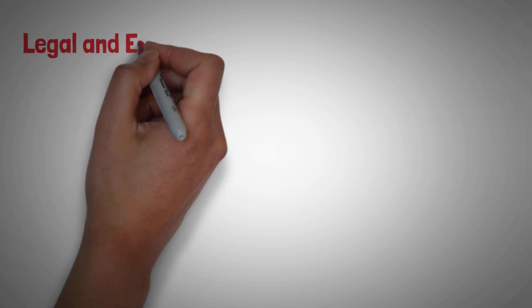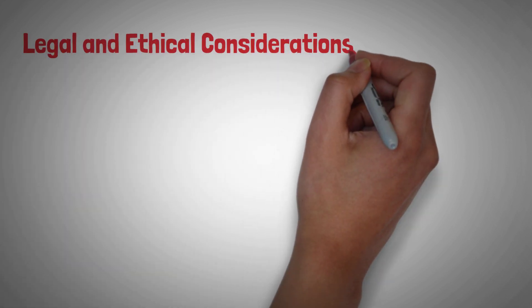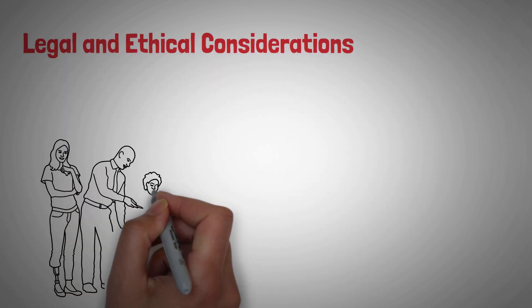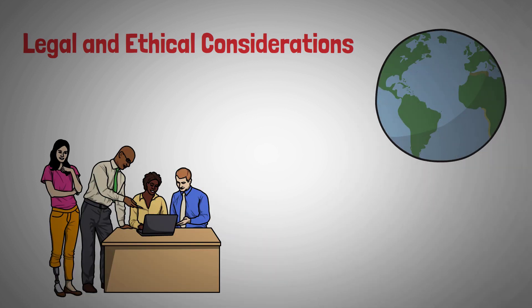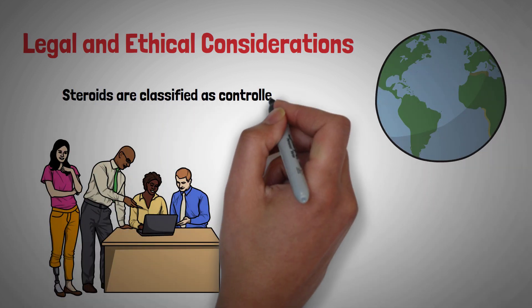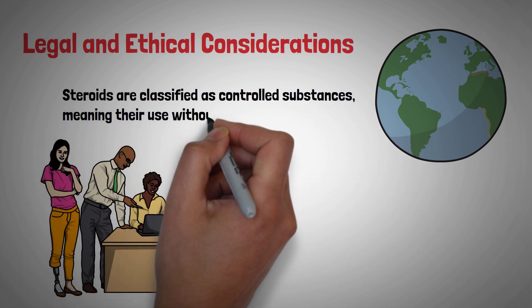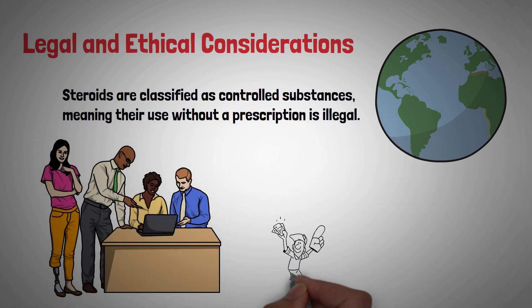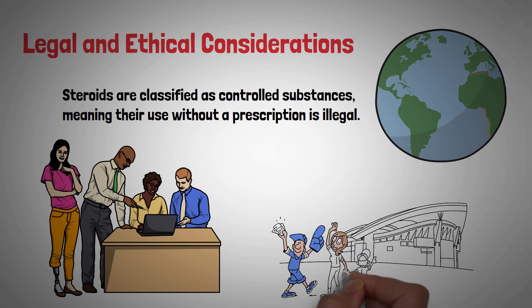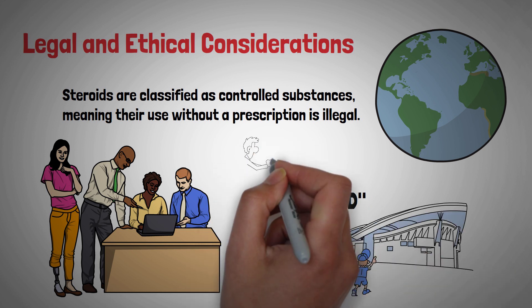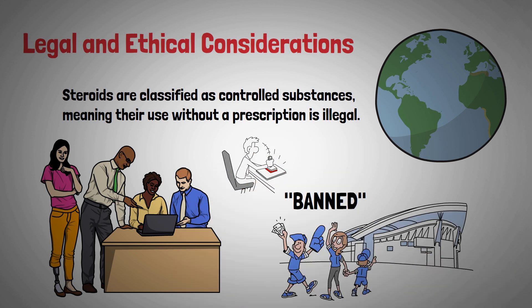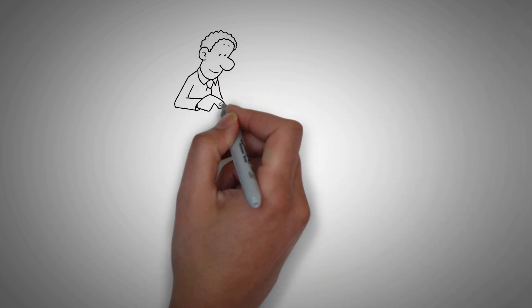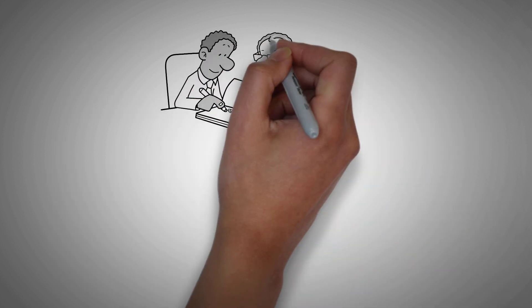Finally, it's essential to consider the legal and ethical implications of steroid use. In many countries, steroids are classified as controlled substances, meaning their use without a prescription is illegal. Additionally, the use of steroids in sports is banned by most athletic organizations, as they keep drug testing protocols in place to detect and deter doping.